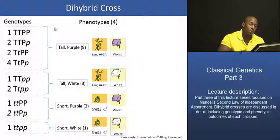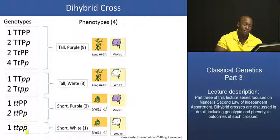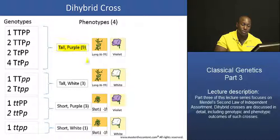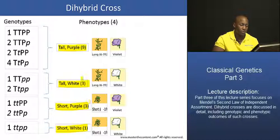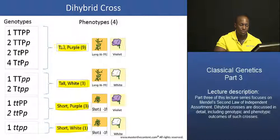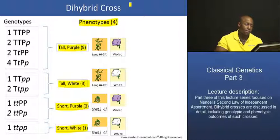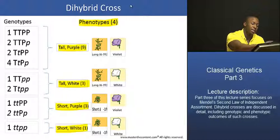So all in all, we have 9 different genotypes — some of which occur more than once as you can see in that grid — and these 9 genotypes produce 4 different phenotypes: tall and purple in a ratio of 9, tall and white in a ratio of 3, short and purple in a ratio of 3, and short and white in a ratio of 1. So those are all the genotypes that produce just those 4 phenotypes we observe in the second filial generation, the F2 generation.